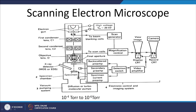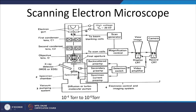In an optical microscope we use a lens to collimate the beam, but in an electron microscope we cannot use lenses — instead we use electromagnetic coils which serve as lenses and collimate the beam. The first condenser lens C1 collimates the beam, the second condenser lens C2 further collimates it, and finally the collimated beam falls on an objective lens O, which is connected to a scanning coil, which in turn is connected to a magnification control unit and scan generator.